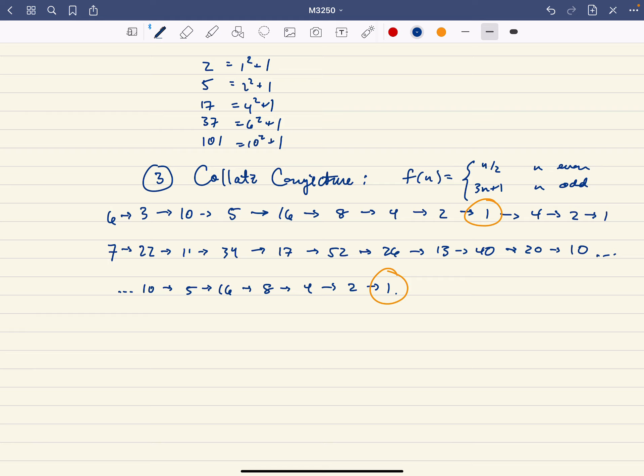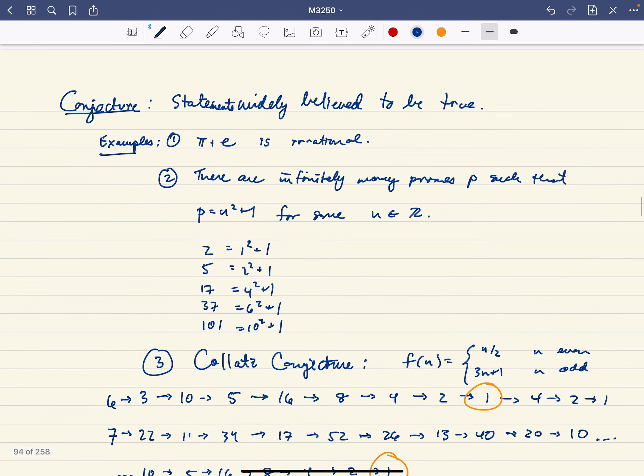So anyway, so that's the Collatz conjecture, and that's what conjectures are in general. So again, a conjecture is a statement widely believed to be true by many mathematicians, but something for which we don't have any proof yet.